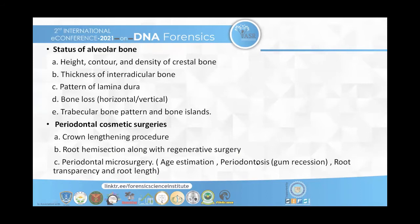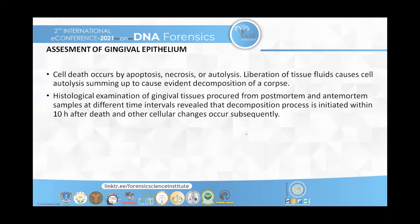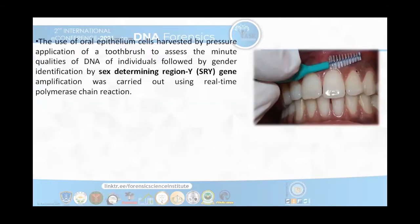Age estimation can also be done with gingival recession, as mentioned earlier. Regarding estimation of gingival epithelium: cell death occurs by apoptosis. Histological examination of gingival tissues procured from post-mortem and ante-mortem samples at different time intervals revealed that the decomposition process is initiated within 10 hours after death, and other cellular changes occur subsequently. We extract gingival tissue — from the attached gingiva, we take an interdental brush and scrape it off to take the cells. These cells are identified by PCR method, and we can estimate the age or sex of the patient by determining the sex-determining region using SRY gene amplification.